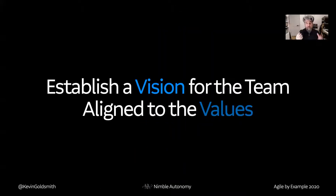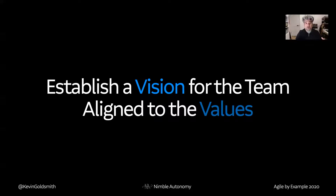From the values comes the vision for the team, which should be well aligned to those values. This is setting the North Star and helping with alignment. That vision should not just be the property and creation of the team — it is agreed upon by the stakeholders for the team, the leadership, and other teams in the organization, to make sure that vision makes sense with where the larger group is going.